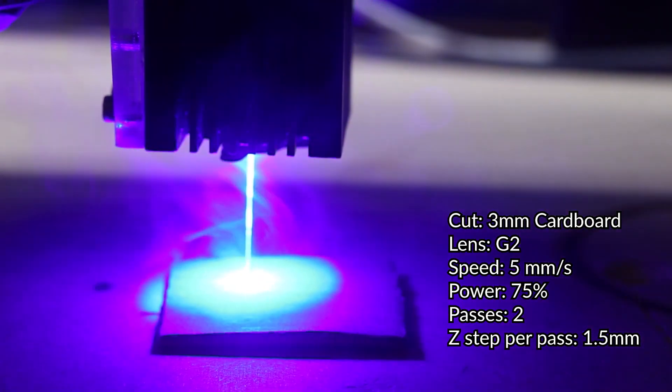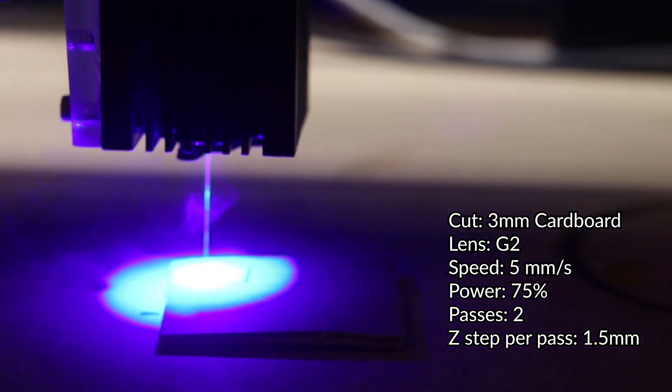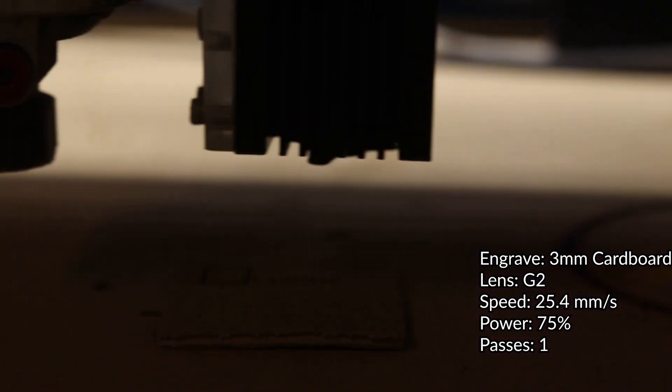So cardboard is super simple—you want to lower the power, raise the speed, and it doesn't take too much to engrave paper products, but it does look really cool and it's super easy.